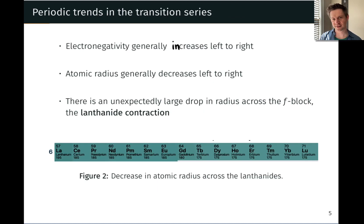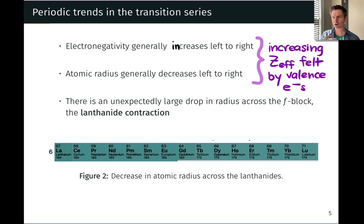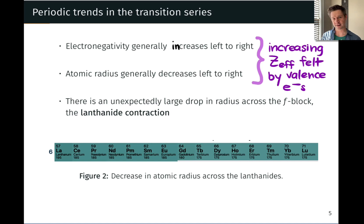Let's talk about periodic trends in the transition series. As we've seen for the main group previously, electronegativity generally increases left to right across a period, and atomic radius generally decreases left to right. Both of these effects are ultimately due to an increase in the effective nuclear charge, Z-effective, felt by the valence electrons as we add more protons to the nucleus. The changes are not as dramatic as in the main group, and there are some exceptions because the d orbitals are funky, but generally electronegativity increases left to right and atomic radius decreases left to right.